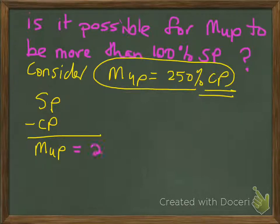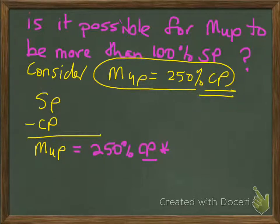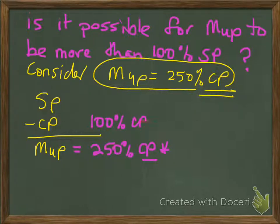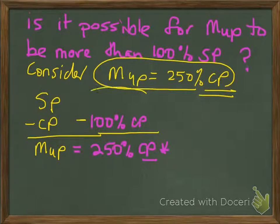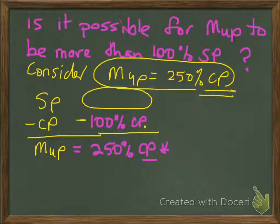What we've established is that markup is 250% of cost price. I put the cost price down here because now I want to go to where 100% of cost price is, and 100% of cost price is right here in the cost price row. In order to get to the markup, I need to subtract the cost from the selling price. Selling price minus cost price gives me my markup. Notice that all of these are based on cost price, so the percentage of selling price has to be based on cost price as well.